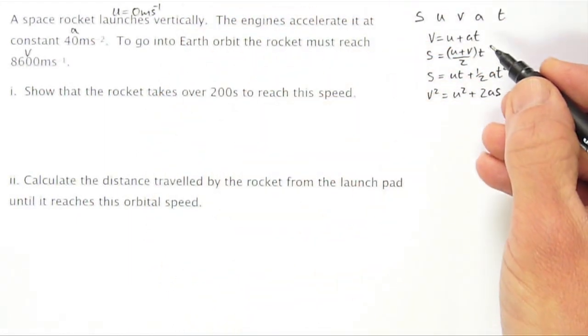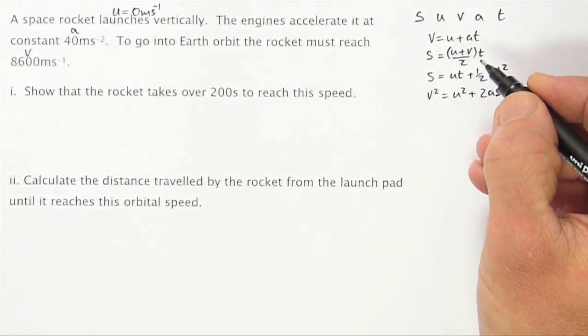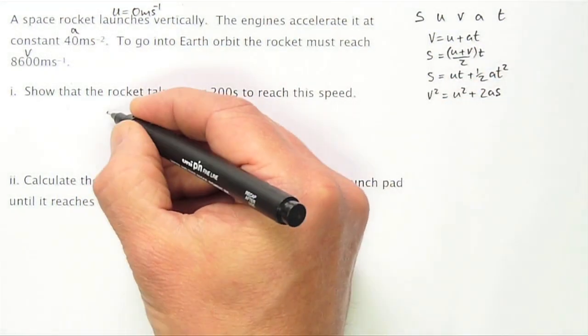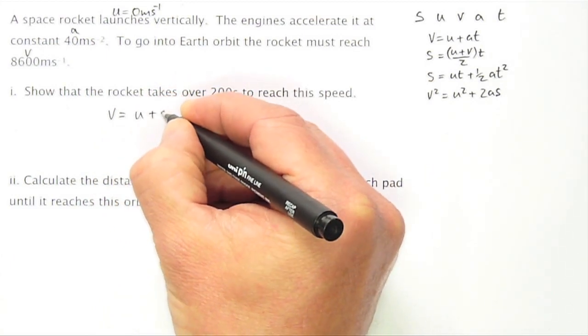And what we're trying to find here is the time. So looking at these equations, the equation that has V, U, A and will give us T is the first one. V equals U plus AT.